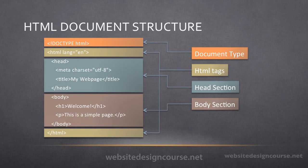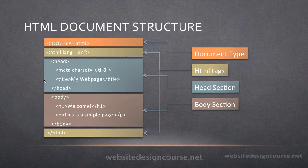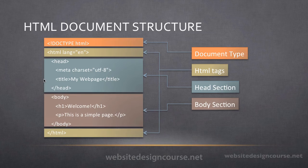Those are the main sections of an HTML document: the doc type on the first line, the HTML tags, and the head and body sections. Now that we have a few of those basics out of the way, let's go ahead and look at a few code examples to review some of these principles for HTML syntax.